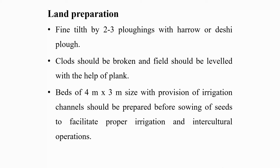After sowing, prepare the land for plantation. Soil is brought to a fine tilth by 2 to 3 ploughings. Stubbles of previous crops should be collected and removed from the field. Clods should be broken and the field leveled with the help of a plank. Beds of 4 meter by 3 meter size with provision of irrigation channels should be prepared before sowing of seeds to facilitate proper irrigation and intercultural operations.